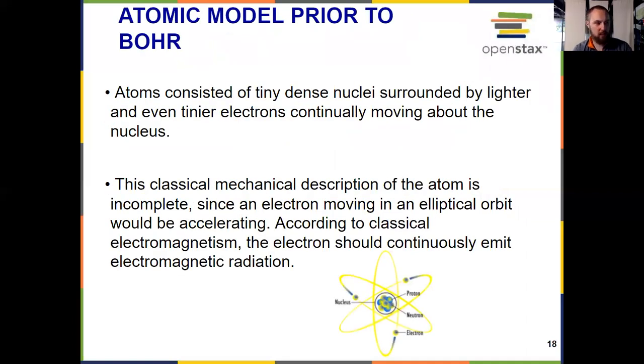What was the understanding of the atom prior to Bohr's work? We knew about the nucleus from Rutherford's experiments. The nucleus has the protons and neutrons, most of the mass, and a positive charge. And then we've got these electrons that are negatively charged that surround the nucleus. But the question was, how?